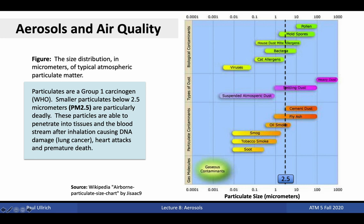Aerosol concentration is strongly connected with air quality. Higher aerosol concentrations can cause breathing problems, particularly among sensitive groups. When breathed in, these particles can clog up the lungs and interfere with the ability of people to absorb oxygen. Particulates whose size is below 2.5 micrometers are particularly dangerous, as these are able to penetrate into tissues and the bloodstream after inhalation and cause DNA damage, potentially triggering cancer, heart attacks, and other forms of premature death. Those particulates smaller than 2.5 micrometers are given the name PM2.5, and their atmospheric concentration is often the primary feature of air quality reports. PM2.5 can come from a variety of sources including biological contaminants, atmospheric dust, and pollution from fires or combustion.